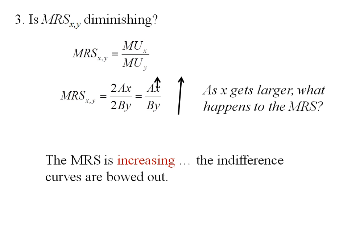So in this case, the marginal rate of substitution is increasing. And that tells us the indifference curves are bowed out. So we have a negative slope, it intersects both axes, and it is bowed out.